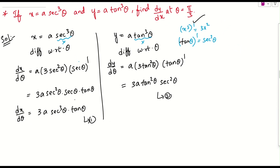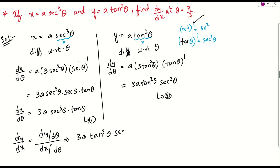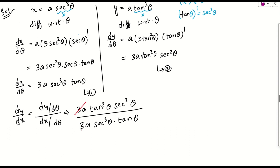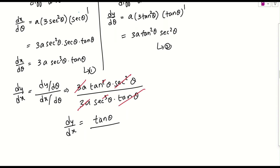Now, what they are asking is dy by dx, which is dy by d theta divided by dx by d theta. dy by d theta is 3a tan square theta into secant square theta, divided by 3a secant cube theta into tan theta. We can cancel 3a from both sides, cancel secant square with secant square, and cancel one tan from numerator and denominator. We are left with dy by dx equals tan theta over secant theta, where one tan remains in the numerator and secant theta remains in the denominator.